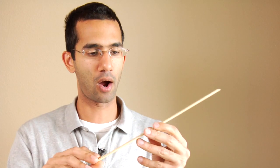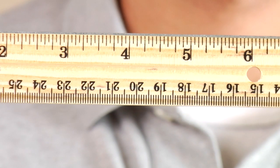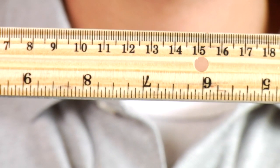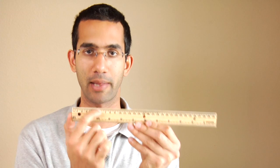For those of you who have never seen a ruler, this is what a ruler looks like. On one side of it we have the inches, and on the other side we have the centimeters. And the centimeters, as you all know, are broken down into millimeters.